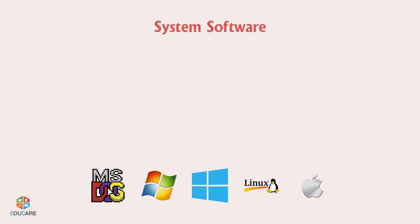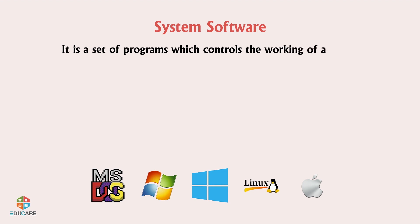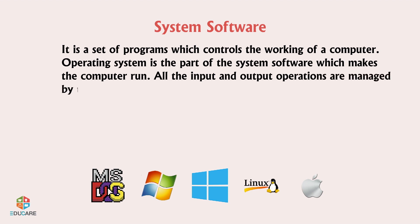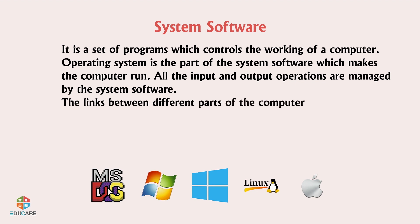System software is a set of programs which controls the working of a computer. The operating system is the part of the system software which makes the computer run. All the input and output operations are managed by the system software, which also manages the links between different parts of the computer.